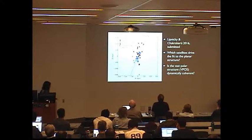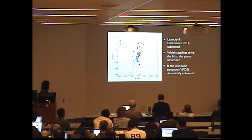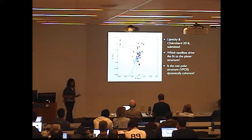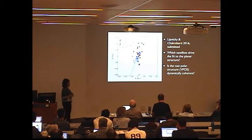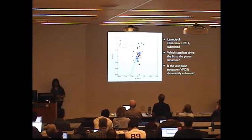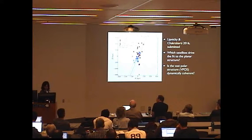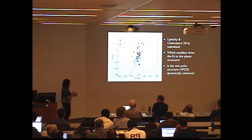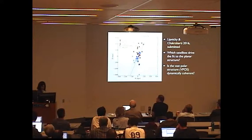So, what we've done recently is to take a different approach to this problem. It's a very simple approach, and we're asking two very simple questions. The first question is, which satellites drive the fit to this apparent planar structure? Prior to our work, a number of groups, including Pawlowski and Krupa and others, argued that LEO-1, which has very extreme kinematic properties, is not a member of the vast polar structure. So we re-examine this question in the broader context.